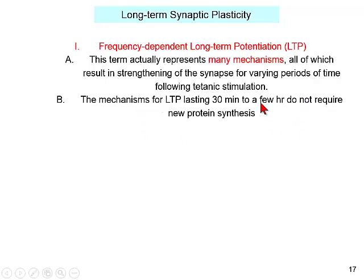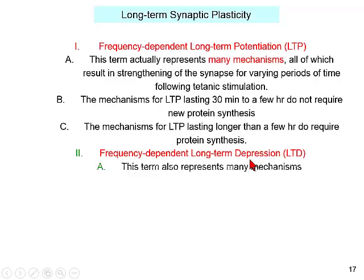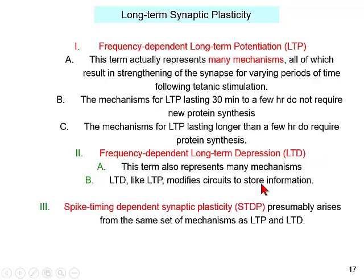LTP is frequency-dependent and there are probably many mechanisms. LTP lasting 30 minutes to a few hours does not require new protein synthesis, but after a few hours new proteins do need to be synthesized. In addition to LTP, produced by high-frequency training at 50-200 Hz, there is long-term depression (LTD). Again, many mechanisms; it also modifies circuits to store information. LTD typically occurs for stimulus frequencies lower than LTP — neuroscientists usually talk about LTP as tetanic stimulation at 50-200 Hz, and LTD at 1-10 Hz.